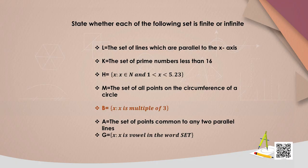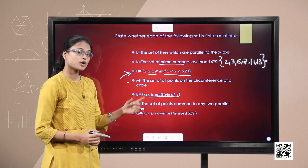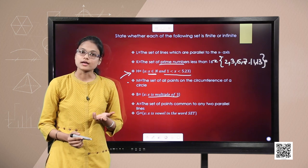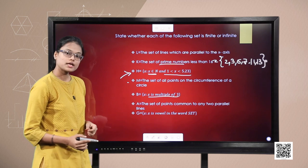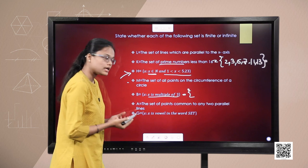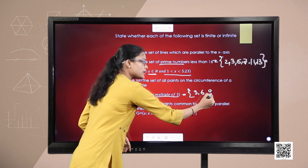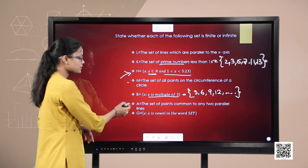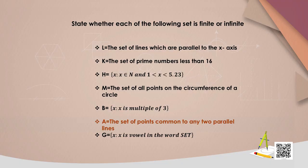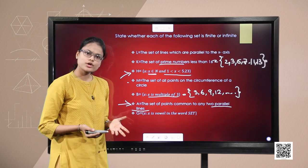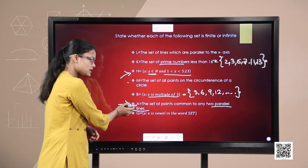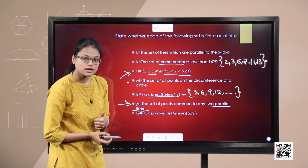Set B consists of all multiples of 3: 3, 6, 9, 12, and so on — similar to the set of all even natural numbers being infinite. This set B is an infinite set. Set A is the set of points common to any two parallel lines. Since parallel lines never meet, there is no common point — set A is an empty set, and an empty set is a finite set.